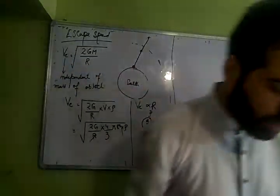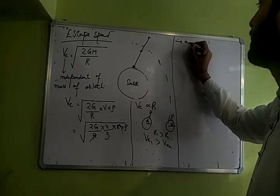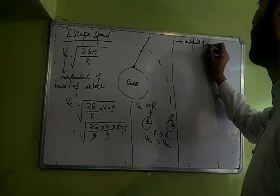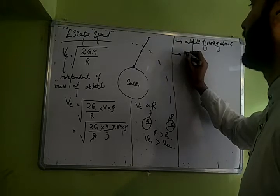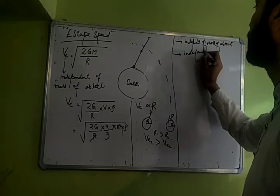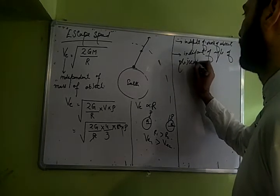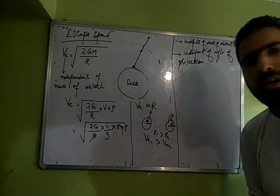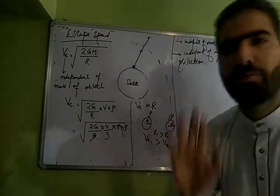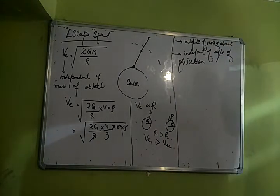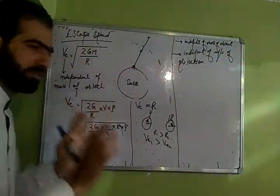Ek aur important point jo aksar puchha jata hai. Yeh escape speed hai, aap nai dekha it is independent of mass of object. Or ek cheez jis peh depend nai karta hai, it is independent of angle of projection. Please remember this point. Projection aap chahe 30 degree pe karo, 60 pe throw karo, same speed requirement.